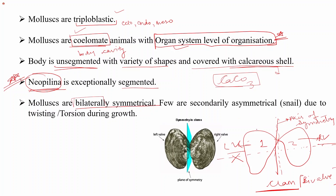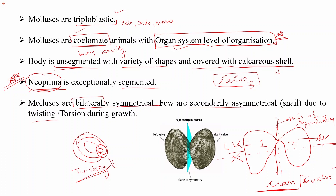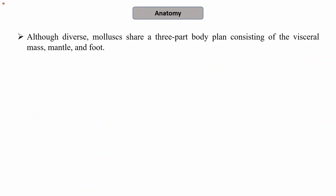However, in some cases, certain mollusks are secondarily asymmetrical — for example, snails. Snails are slightly twisted toward one side, and this torsion leads to their asymmetrical nature because they can no longer be divided into two symmetrical halves. So in most cases mollusks are bilaterally symmetrical, but in snails, twisting or torsion during growth leads to asymmetry.